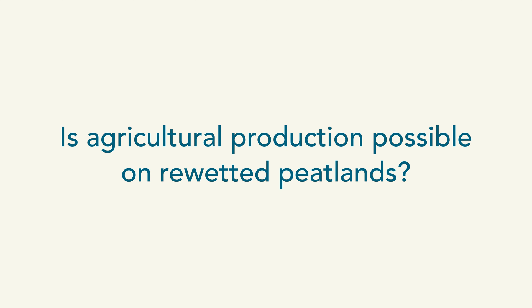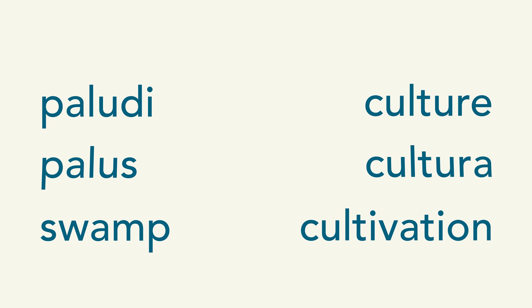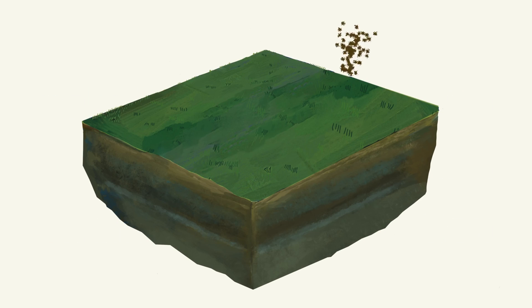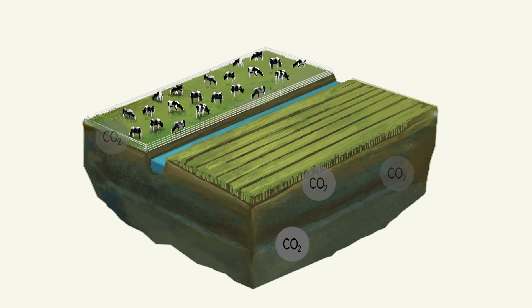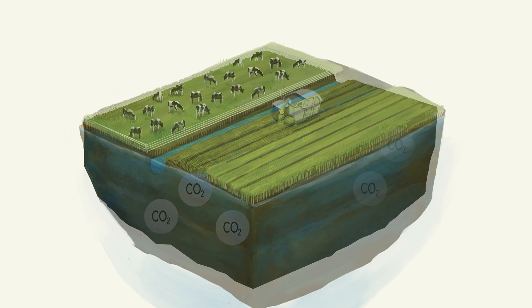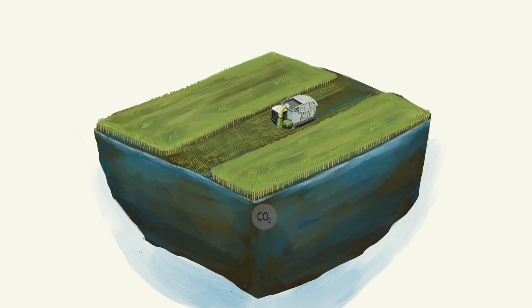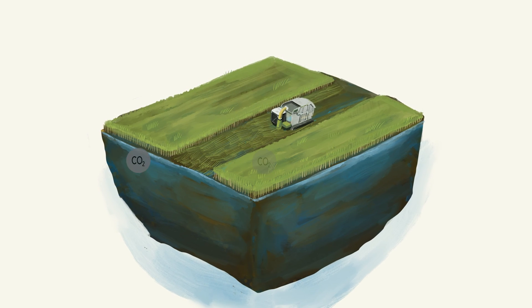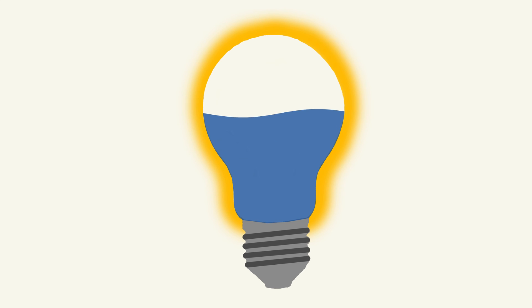Is agricultural production possible on re-wetted peatlands? The agricultural use of wet or re-wetted peat soils is called paludiculture. The term is derived from the Latin 'palus', meaning swamp, and 'culture', meaning cultivation. In conventional agriculture on peatland, the site is adapted to the required production — conventional agriculture drains and interferes with the soil, resulting in very high emissions. In contrast, paludiculture adapts production schemes to the wet site conditions, achieving significantly lower or even zero emissions. Paludiculture is an innovative wet agriculture on peatland that conserves soil and protects the climate.